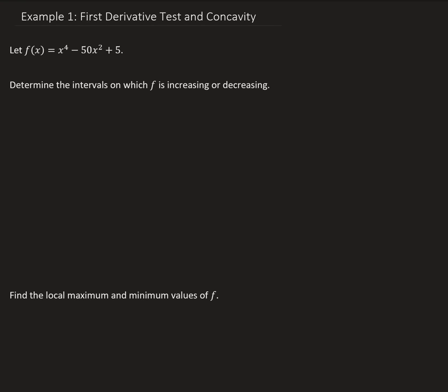The first thing is we need to find the critical numbers. That means we need to take the derivative of our function. So we're going to have f prime of x equals 4x cubed minus 100x, using the power rule for derivatives. We go ahead and set this equal to zero: 4x cubed minus 100x equals zero.